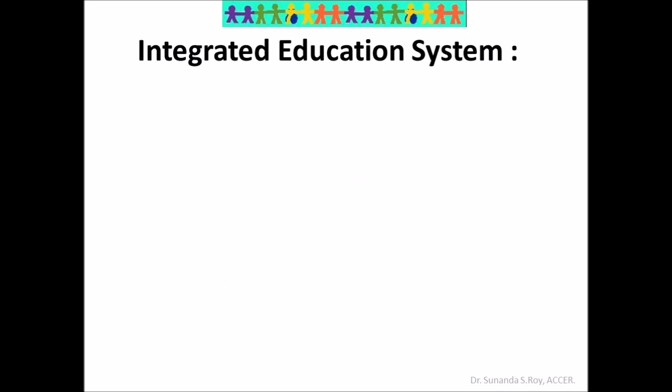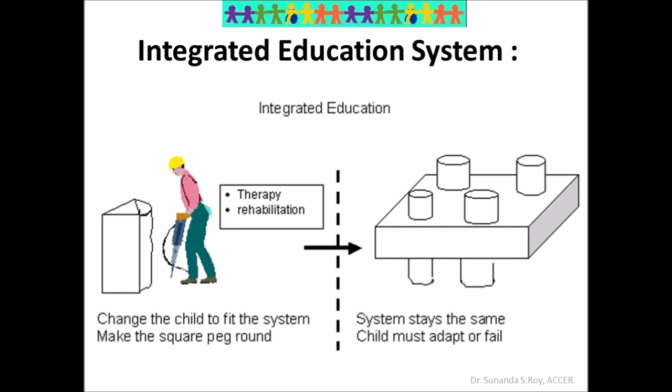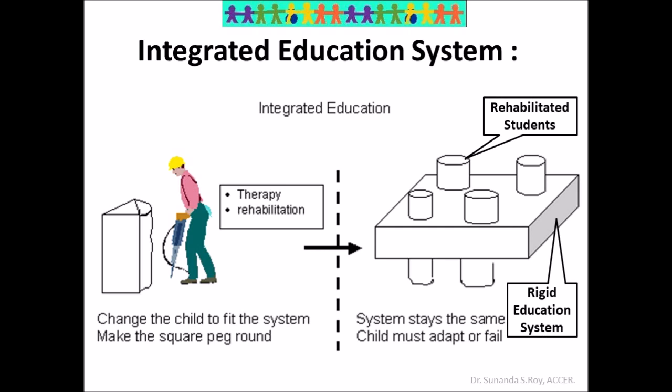The third one is the integrated education system. Here the pegs are modified to fit into the board. The child is changed through rehabilitation or undergoes therapies like speech therapy or physiotherapy, depending on the learning challenges faced, and then placed into a school similar to the normal education system. Hence the child is changed, but the education system does not change. The integrated education system is a rigid system wherein if the child cannot adapt, the child fails.